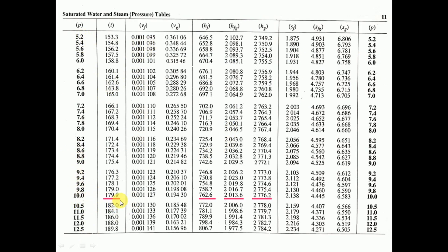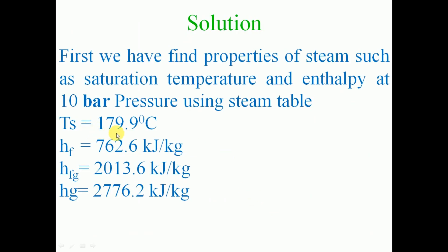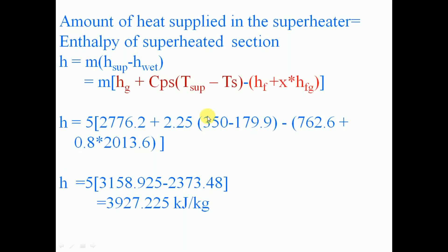At 10 bar, from the steam table: saturation temperature Ts = 179.9°C, HF = 762.6 kJ/kg, HFG = 2013.6 kJ/kg, and HG = 2776.2 kJ/kg.